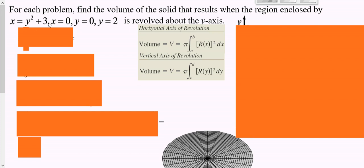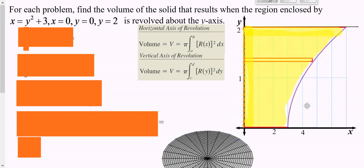Here we have a sideways parabola, x equals zero which is the y-axis, y equals zero which is the x-axis, and y equals two which is a horizontal line at a height of two. Graph that and look for the shape bounded by all of these, highlighted in yellow. I'd encourage you to shade the area bounded by all of these to make sure you get the right shape.